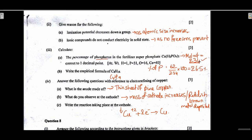Ionic compounds do not conduct electricity in solid state because in solid state ionic compounds do not have any free ions which can conduct electricity. Calculate the percentage of phosphorus in the fertilizer superphosphate Ca(H2PO4)2: molecular weight is 234; two phosphorus atoms have a total mass of 31 × 2 = 62; percentage = 62/234 × 100 = 26.5%.